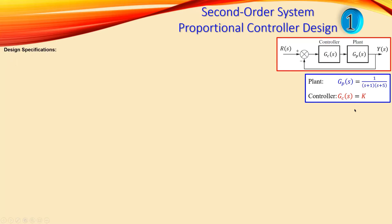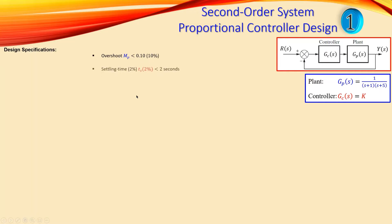The design specifications are as follows. The overshoot must be less than 10% (0.10), and the settling time using the 2% criterion must be less than 2 seconds. From these two specifications we will determine our design point or operating point in the system.